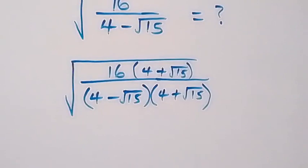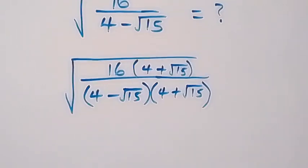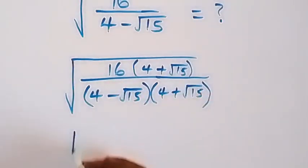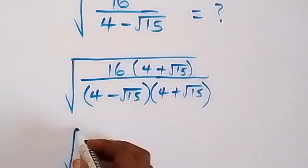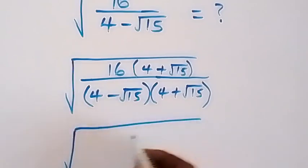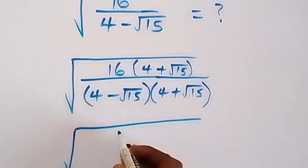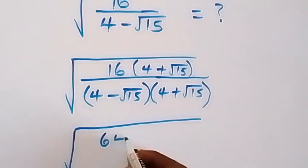Before we continue, please subscribe to this channel for more videos. Thank you. Then from here, 16 — we multiply and open this bracket — so we have square root of 16 times 4, which gives us 64.